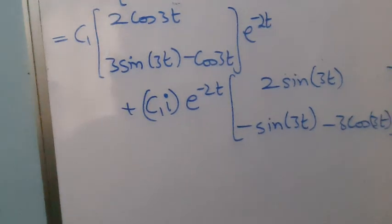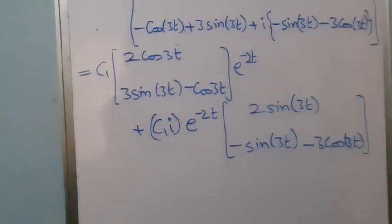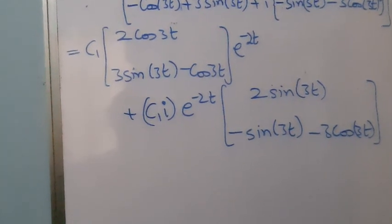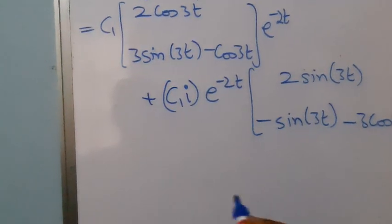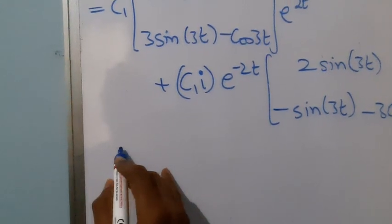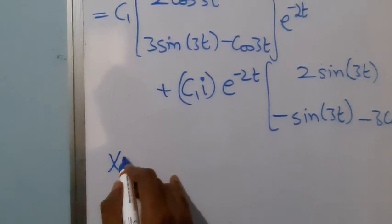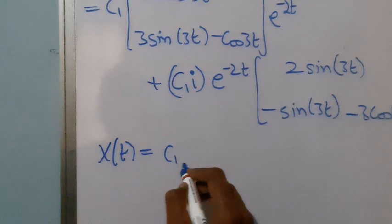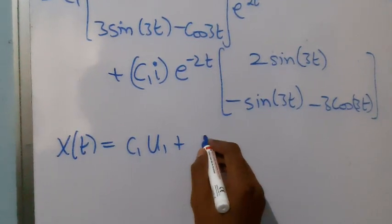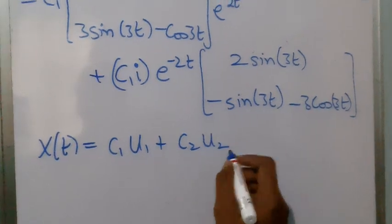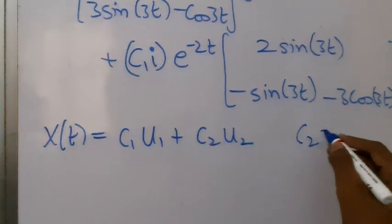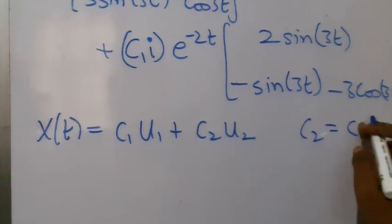The real part and imaginary part of the solution each independently form solutions. So x(t) = c₁·u₁ + c₂·u₂, where u₁ and u₂ are those real solution vectors, and c₂ corresponds to c₁i.